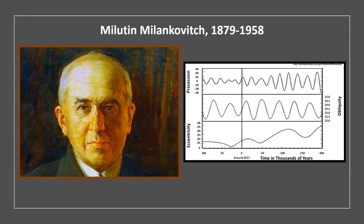The relationship between the Earth's orbital cycles and climate change was proposed by Milutun Milankovic, a Serbian engineer. During the 1930s he proposed that changes in the intensity of solar irradiation received on Earth were affected by three fundamental factors: precession, obliquity, and eccentricity. These factors are now collectively known as the Milankovic cycles.